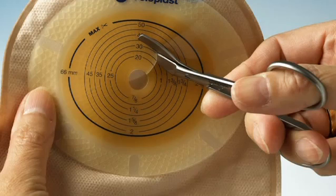If the hole is too big, the skin around the stoma is exposed to the effluent from the stoma and may be damaged. If the hole is too narrow, the adhesive cannot adhere to the surface of the stoma.